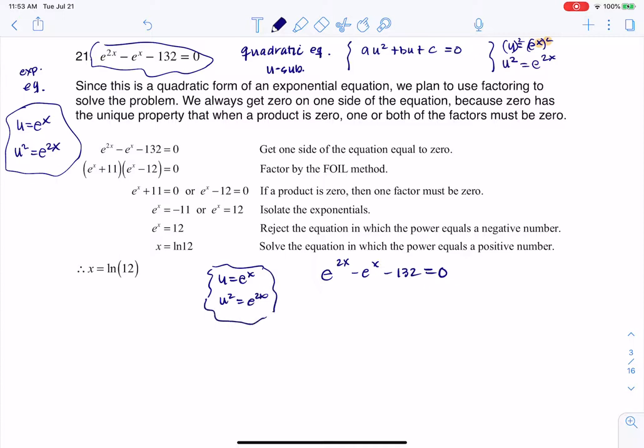So what I'm going to do is I'm going to rewrite this equation in terms of u. So I'm going to get u squared minus u minus 132 is equal to 0, and now it's a quadratic equation, and we can go ahead and factor it.